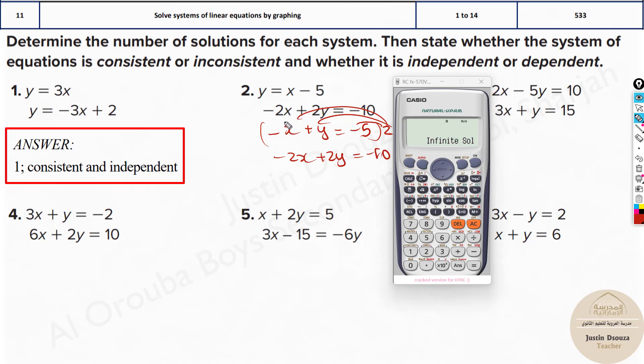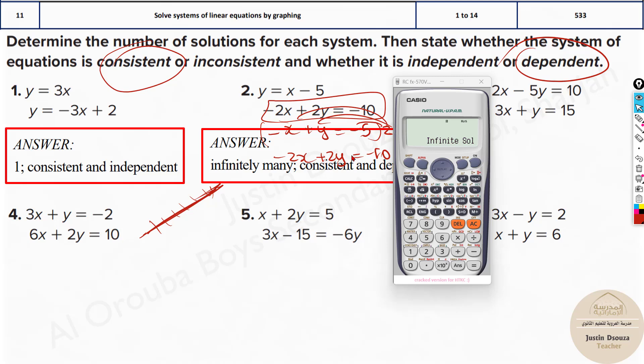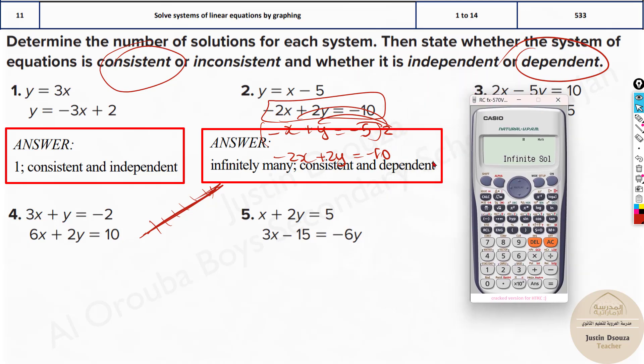Now look at these two equations. What are they? They are the same. That means they are the same line, literally the same line. So there is infinite solution. Every point is the solution. That means it's dependent. Here we have infinitely many solutions and it's consistent and dependent as you can see.